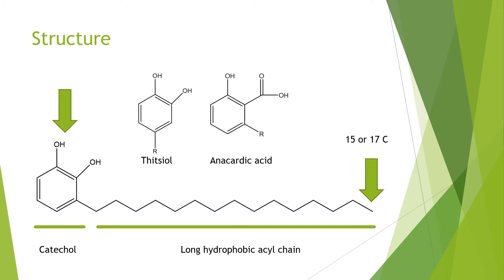In addition, things like ginkgol, which is produced in closely related plants to poison ivy, have a slightly different structure where the relative positions of the hydroxyls and the R-group differ. Also in the unrelated ginkgo tree they produce anacardic acid, which looks very similar to urushiol except you have a carboxyl group instead of a hydroxyl group.